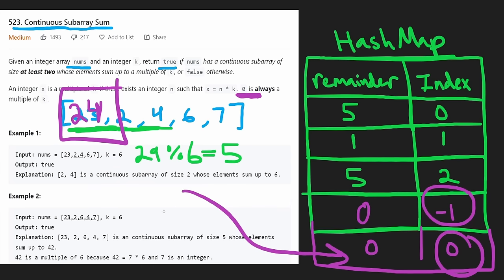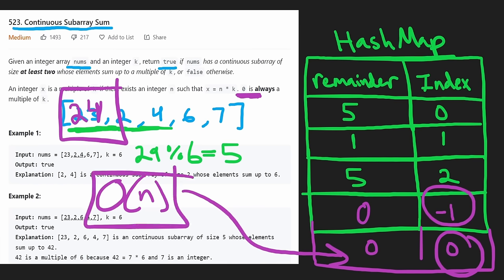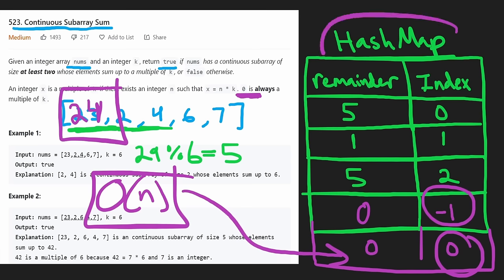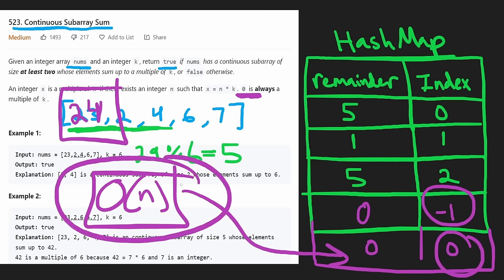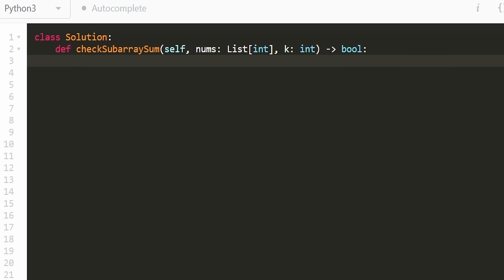Time complexity is O(n) since we're just computing prefix sums and doing hash map lookups. We are using a hash map, so memory complexity is also O(n).